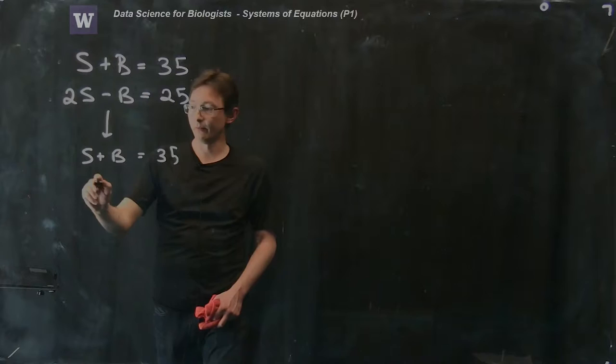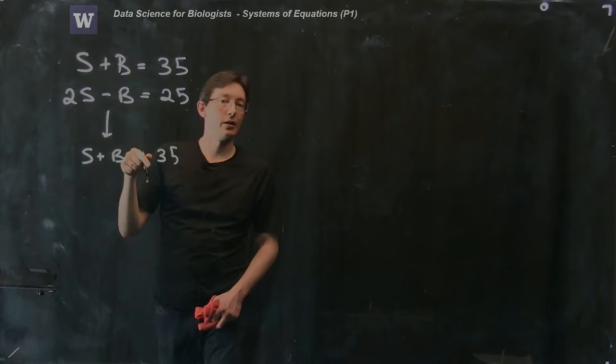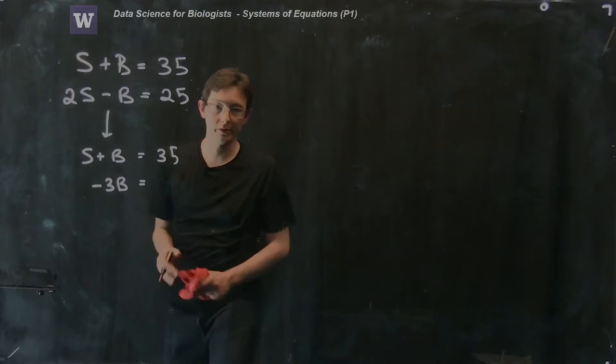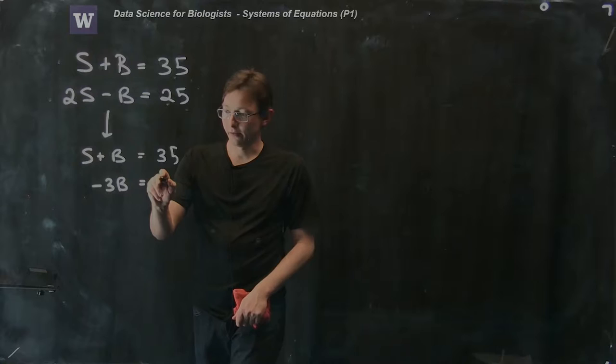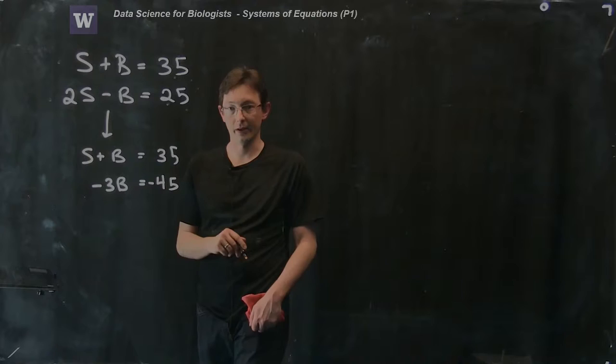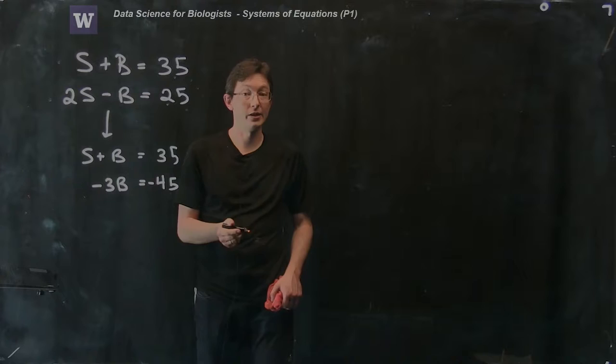The first equation remains unchanged but my second equation I get zero Sally's because I subtracted two of them, so zero, and then my minus Bob I get two more minus Bobs so I have minus three Bobs age equals, and now I had 25 minus 70, what's 25 minus 70? Well, it's 45, minus 45, right, 25 minus 70 is minus 45, and this is actually looking really good. We actually have an expression where I think I can solve for Bob's age now.